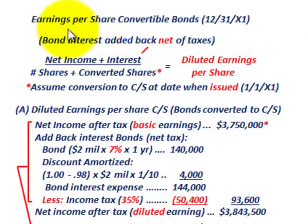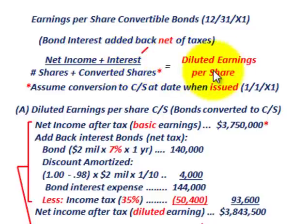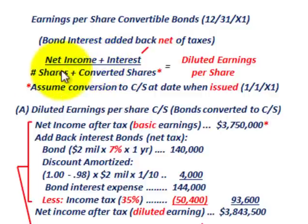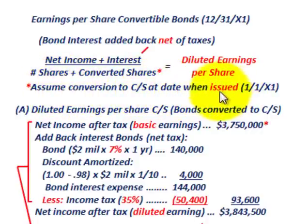Let's start with the earnings per share for convertible bonds at the end of year one, 12/31/X1. Our general equation for diluted earnings per share when dealing with bonds: we take net income — which already reflects the interest expense on the bonds — and add back that interest expense net of taxes. In the denominator, we have shares outstanding plus the number of shares issued when the bonds are converted to common stock, assuming conversion at the date they were issued, 1/1/X1.